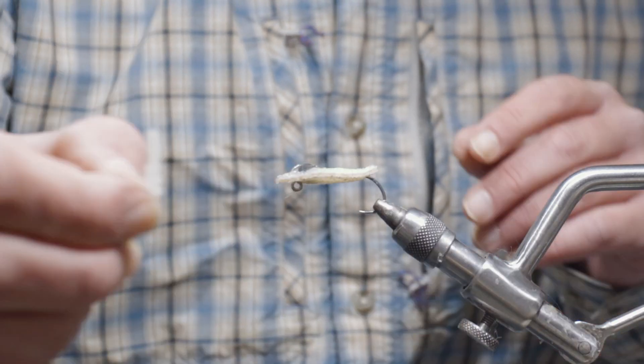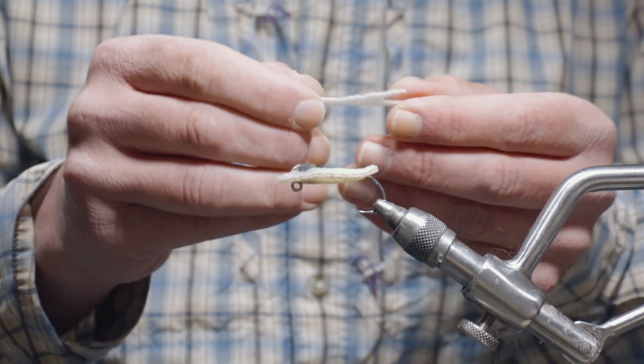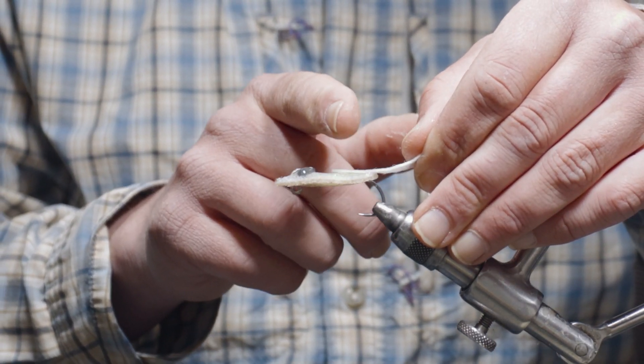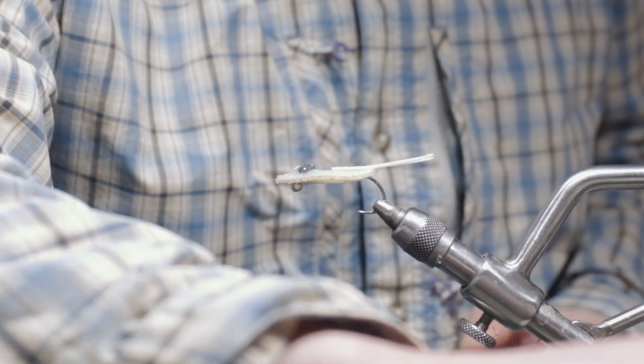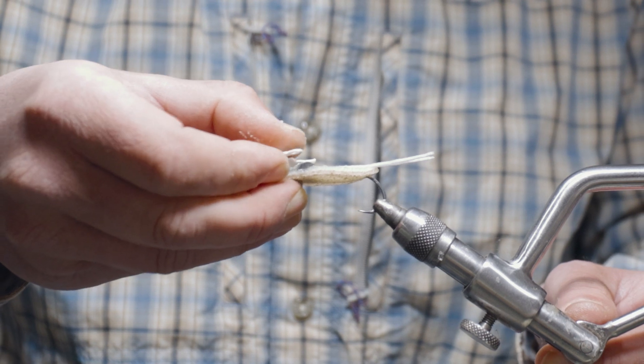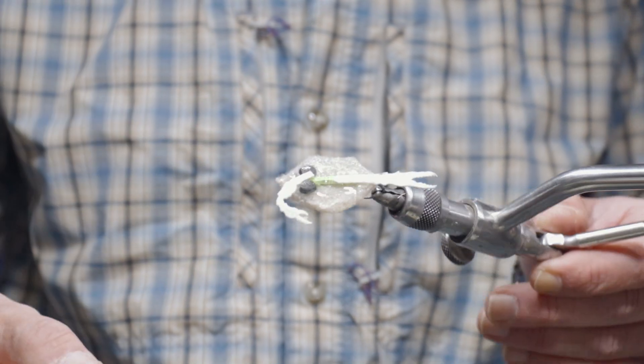And then from here we're going to lay in some pre-made claws. We've got one straight one going out to the side and one bent one on the other side like so.